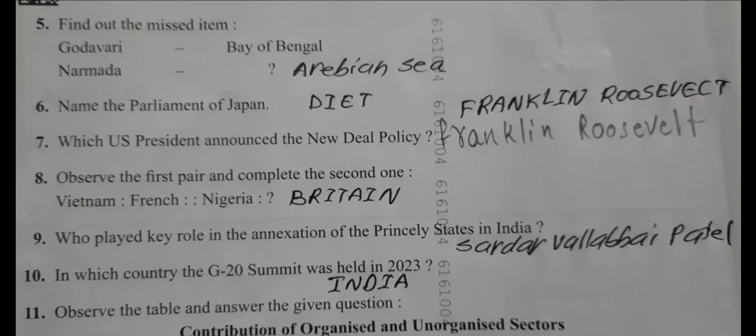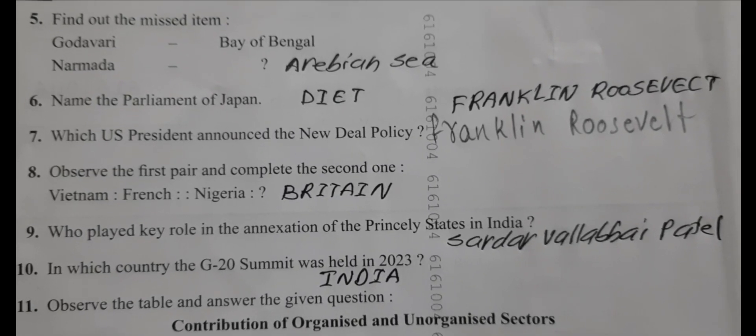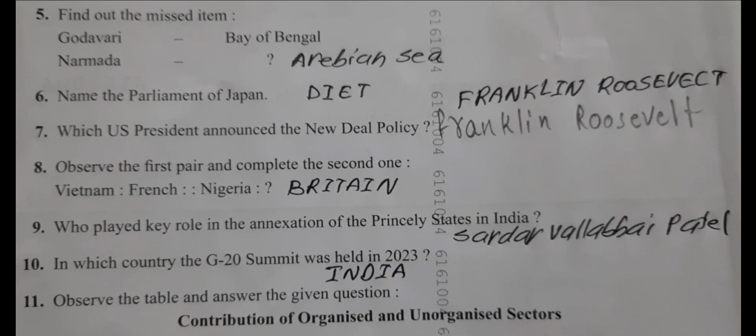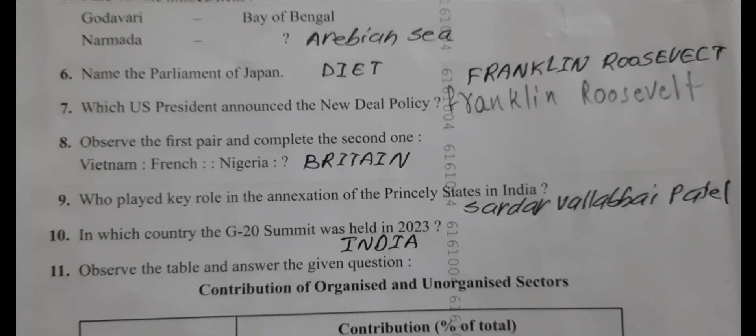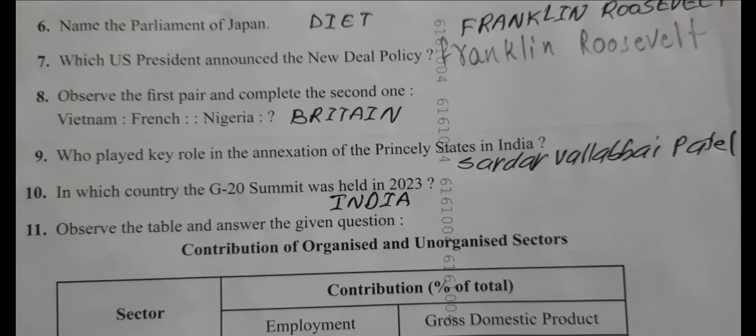The US President announced the New Deal policy. Franklin Roosevelt observed the first part and completed the second one.